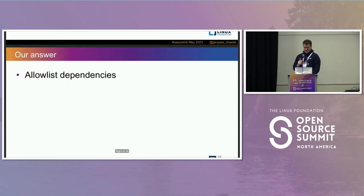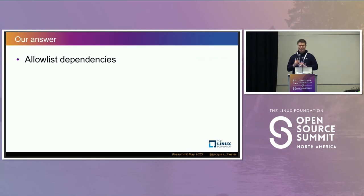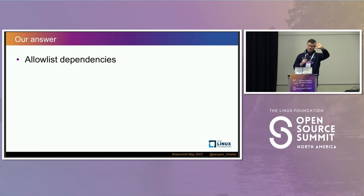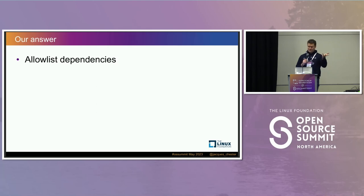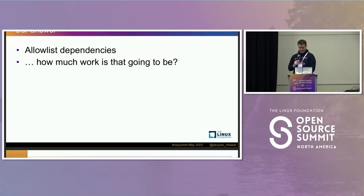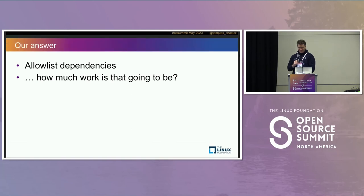We said we're going to allow-list our dependencies. This is still a thing in progress, but as a general class of solution, if you allow-list your dependencies, it becomes impossible for developers to do the fat fingering — it'll just say no, that's not on the list. But how much work is that going to be? There are a lot of dependencies.